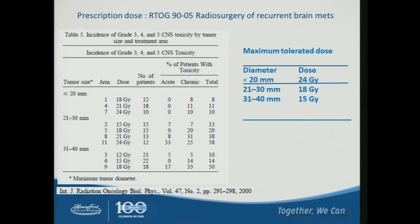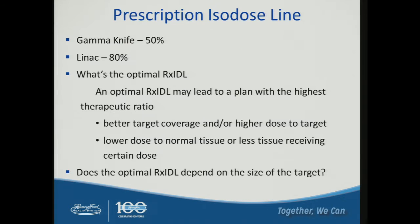Dr. Sadiki just went over the RTOG protocol, which is a very important protocol because it studied toxicity to evaluate prescription dose versus tumor size. As he mentioned, the maximum tolerated dose for diameter less than about 2 cm is about 24 Gray. As tumor size increases, you may consider reducing the prescription dose down to 15 Gray. The prescription dose has been personalized depending on tumor size.